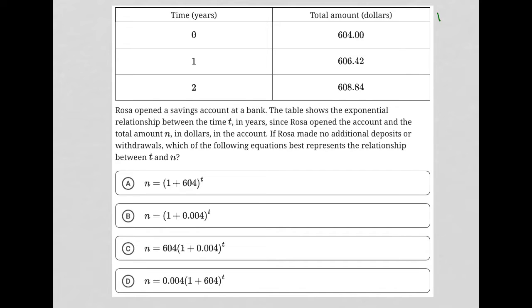So this question is a diagram question. Any question that provides some visual input, I'm going to call a diagram question. Looks like we have time here in our first column, total amount of dollars here in our right column. At zero time, the amount was $604 and so on and so forth. As time goes on in terms of years, this total amount increases a little bit.